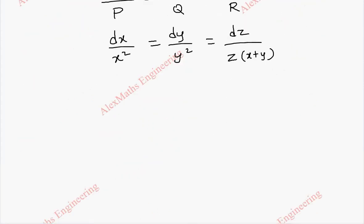Now, taking the first two terms we get dx by x square equal to dy by y square. x terms on one side, y terms on the other side, it is already in the variable separable form.